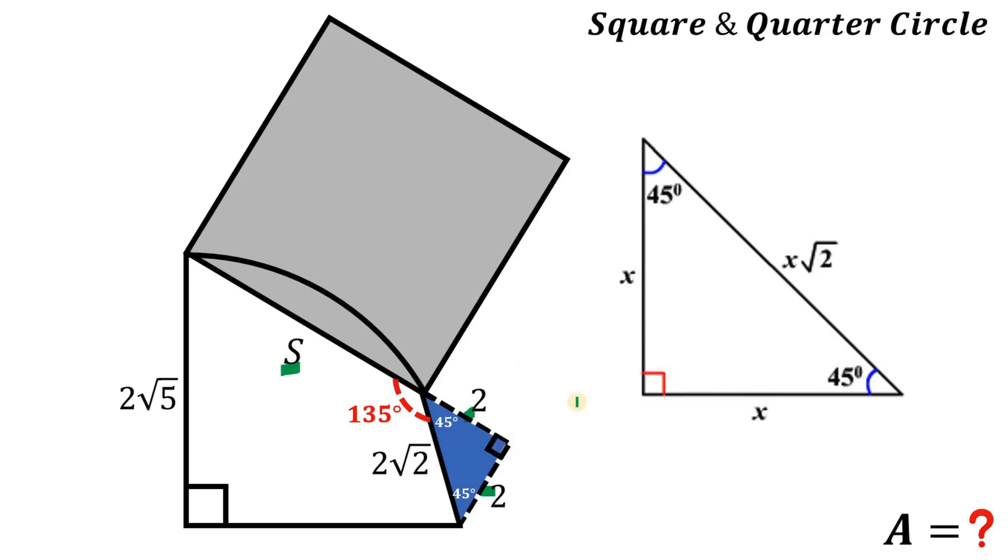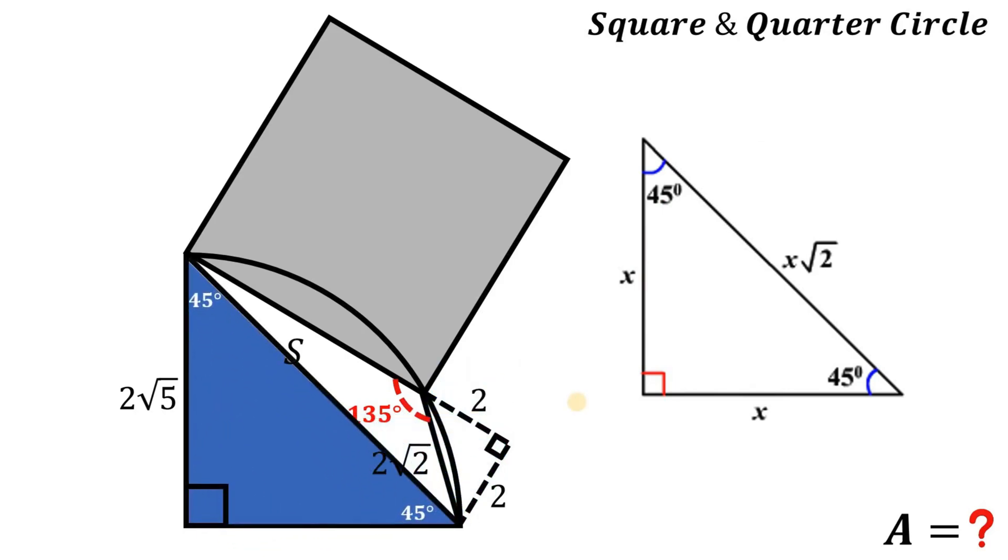And now from here, let's use another 45-45-90 right triangle with the side length of 2 times square root of 5. Using this side, we can calculate its hypotenuse—this is just this side times square root of 2, or simply the hypotenuse is just 2 times square root of 10.